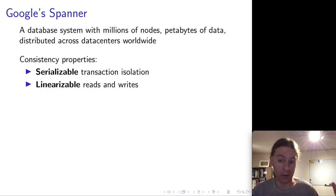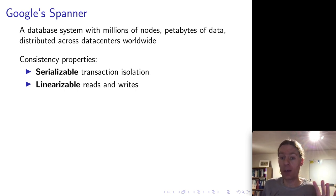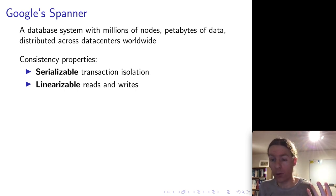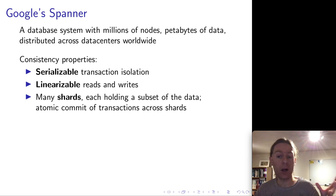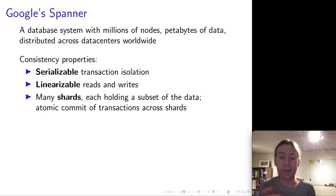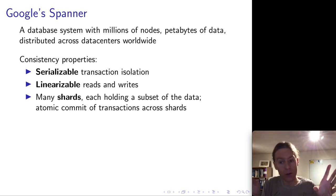In particular, we want serializable transaction isolation — the strongest isolation we can get. We want linearizability for reads and writes, meaning we're always going to see an up-to-date value from any value written. Moreover, we need to support sharding, which means that this huge amount of data — far too much to store on a single node — we have to split into subsets of data. Each node has a replica of a subset of the data, so you can distribute the data across all of these different nodes.